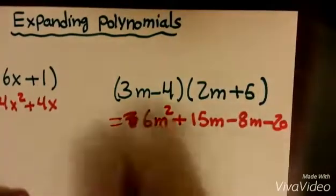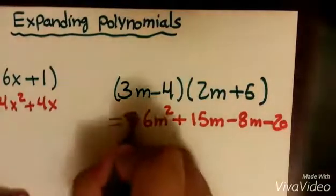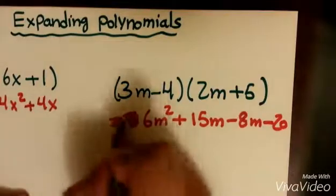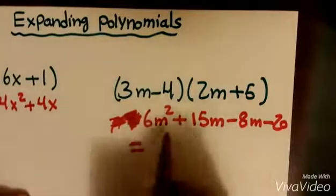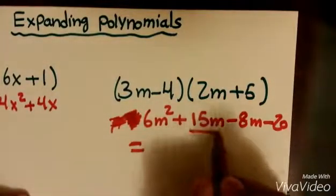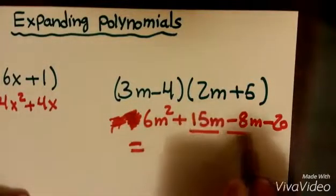Now I have to collect like terms. Sorry, looks messy. The like terms I have are 15m and negative 8m.